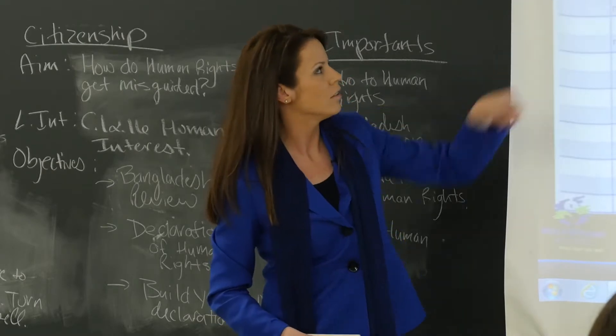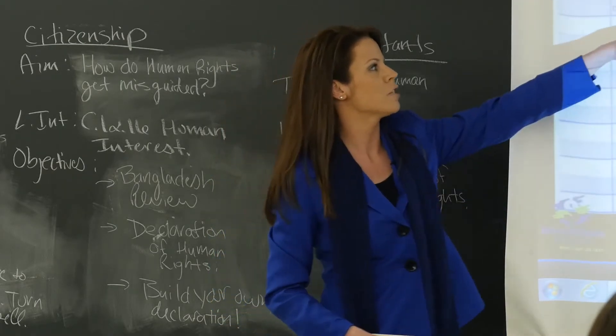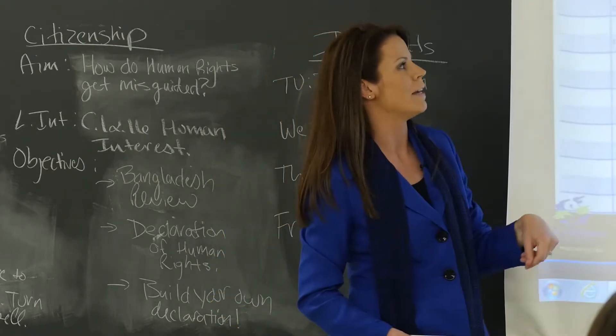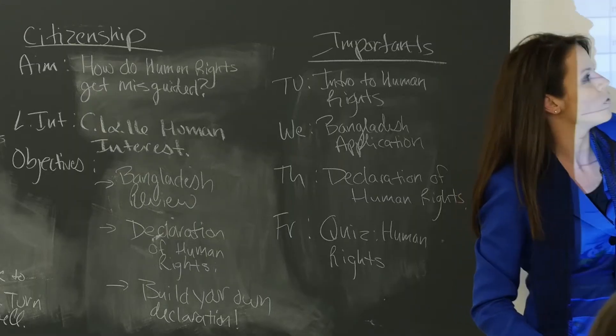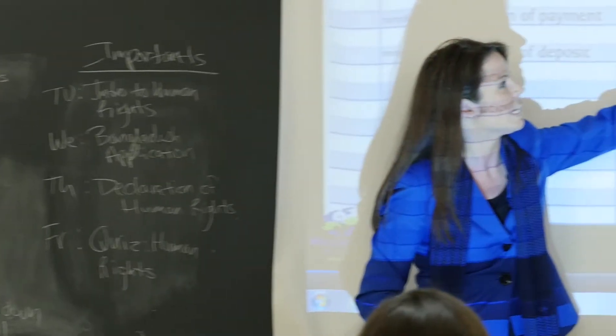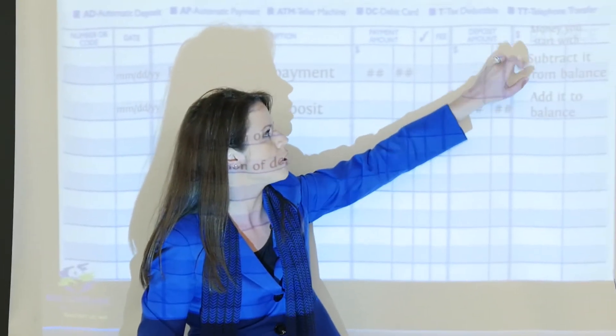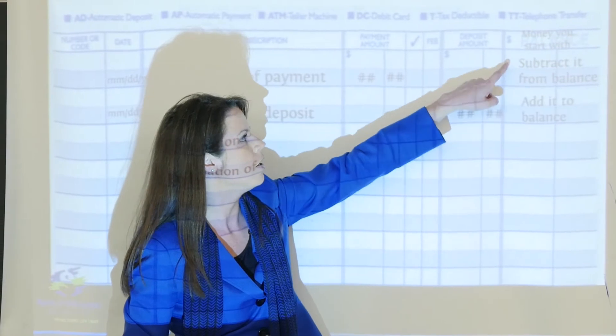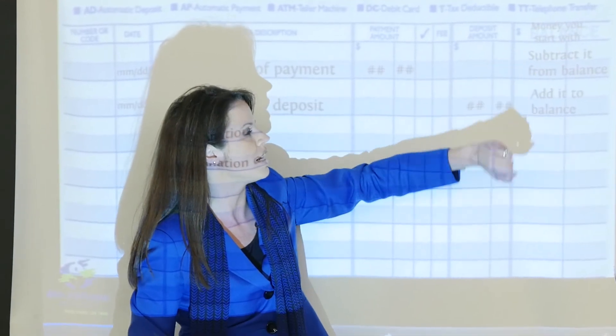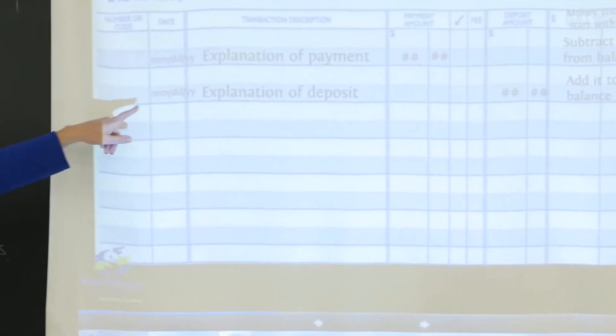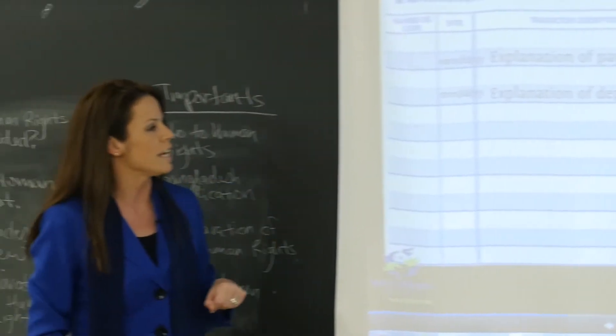So this is what you enter in the check register — this is what it's going to end up looking like. You always want to put the date of the transaction, an explanation of the payment, and then put the payment amount. Move this payment amount over and subtract it from the balance. Start with your balance up here, put in the $50 that you just spent, and this becomes your new balance.